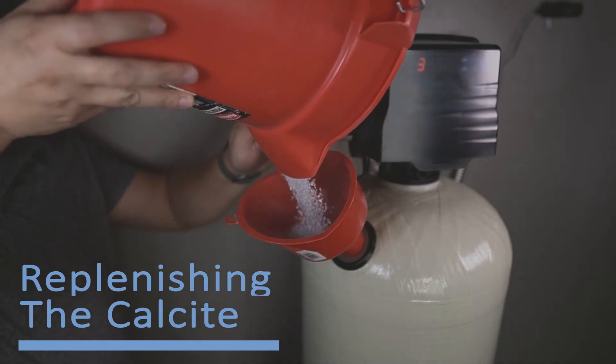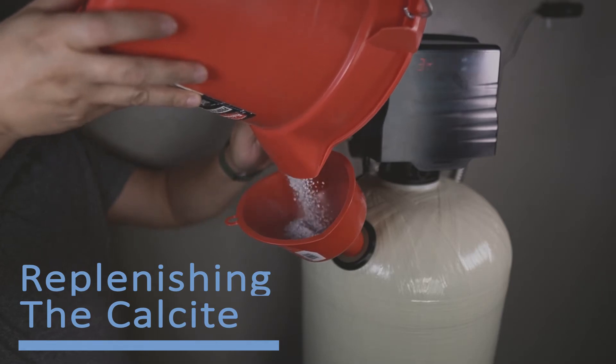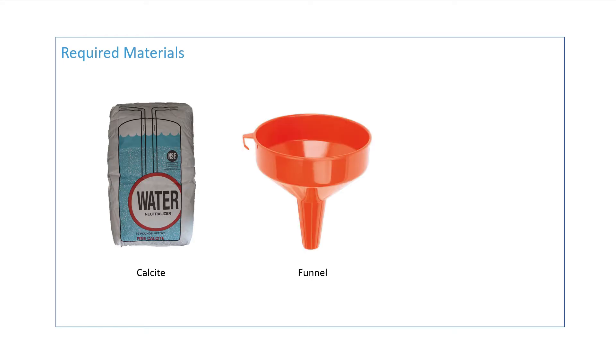This video will guide you through replacing the calcite on your calcite pH neutralizer. The following materials will be required: one to two bags of calcite, a funnel with a large opening, and a flashlight.